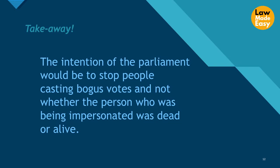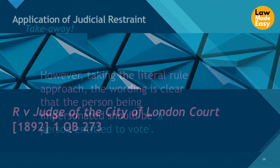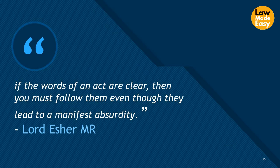If we look at the possible intention of parliament in such cases, clearly the intention would be to stop people casting bogus votes, not whether the person being impersonated was dead or alive. However, taking the literal rule approach, the wording is clear that the person being impersonated should be a person entitled to vote. In R v Judge of the City of London Court 1892, Lord Asher MR supported the literal rule, stating: if the words of an act are clear, then you must follow them, even though they lead to a manifest absurdity.